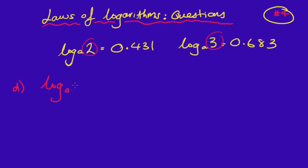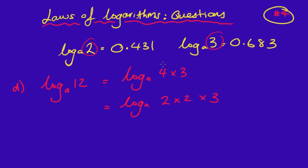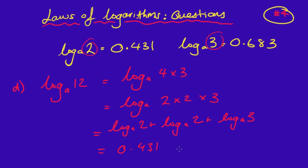Now to find the value of log_a(12). This can be done in lots of different ways. I know that 12 is the same as 2 times 2 times 3, because 2 times 2 is 4, and 4 times 3 is 12. So that becomes log_a(2) plus log_a(2) plus log_a(3), which is 2·log_a(2) plus log_a(3). So 0.431 plus 0.431 plus 0.683. Adding all those together I get the answer of 1.545.